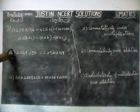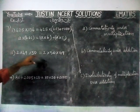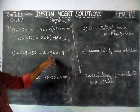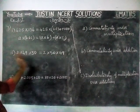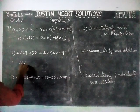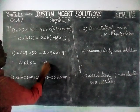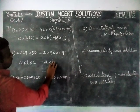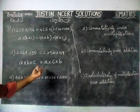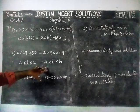Next, second question: 2 into 49 into 50 is equal to 2 into 50 into 49. Here the order is changed but the left-hand side is equal to the right-hand side. So this is A into B into C is equal to A into C into B. If we change the order also, the value will not change. So this is commutative property.